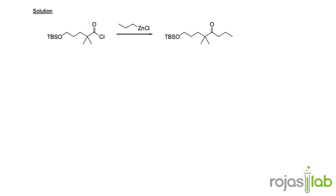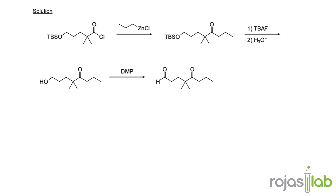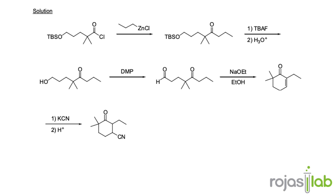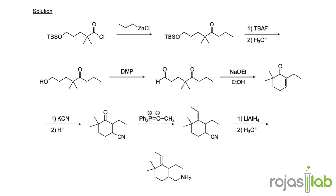So to recap: we used an organometallic reagent to turn an acid chloride into a ketone. We deprotected the silyl ether using TBAF to form a primary alcohol, which gets oxidized using DMP or some other oxidizing reagent. Subsequently, we can do an aldol condensation, which allows us to form a new carbon-carbon bond and reform our cyclic ring, followed by a Michael addition with potassium cyanide. And subsequently, we can interconvert the ketone into an alkene using a phosphorus ylide Wittig reagent. Finally, we reduce the nitrile into a primary amine using lithium aluminum hydride.